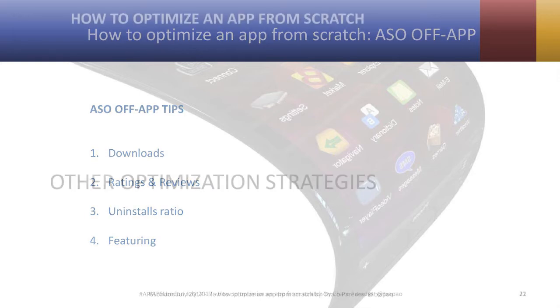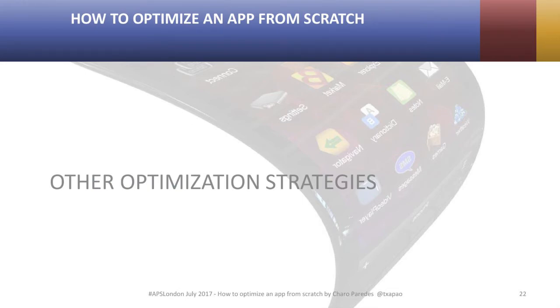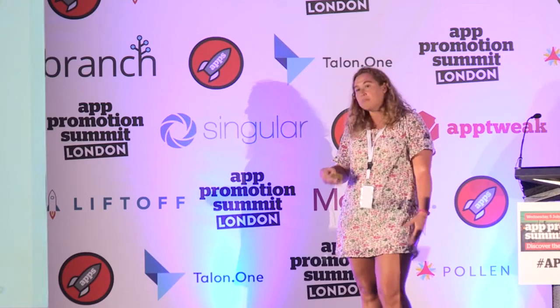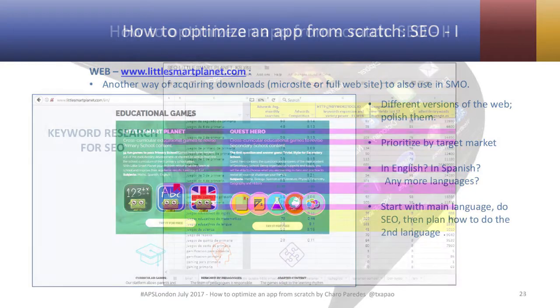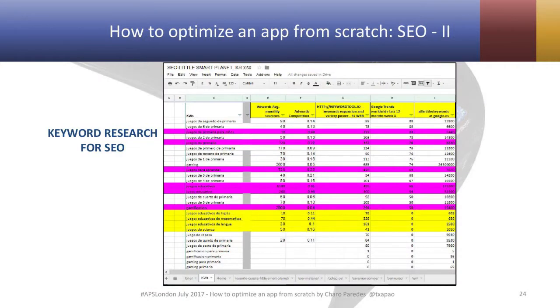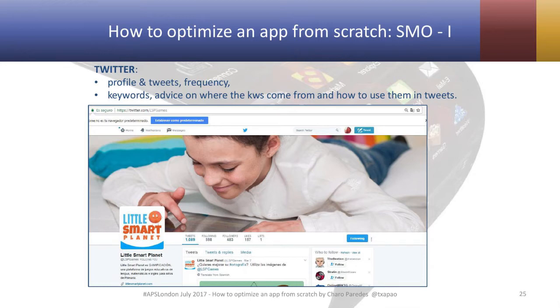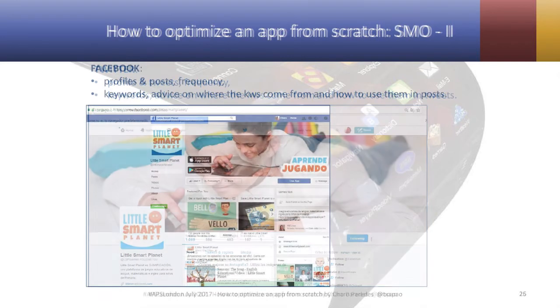The focus of this presentation is to give you ideas about how to optimize from scratch — beyond conventional techniques, thinking a little bit outside the box. With the same example of Little Smart Planet, something else we did was optimizing the web: SEO was worked on with specific keyword research in both the Spanish and English versions. From the research for both SEO and ASO, we also optimized all the social media profiles — on Twitter and on Facebook.